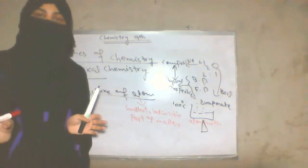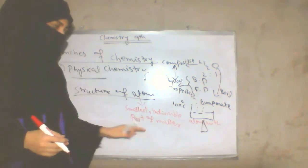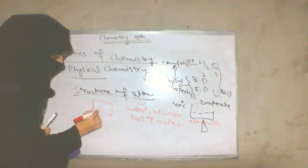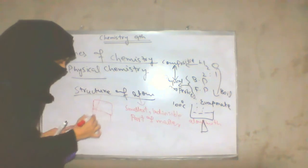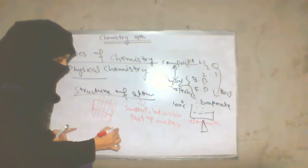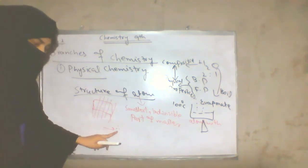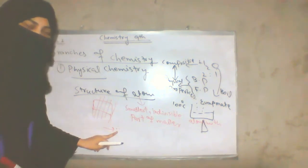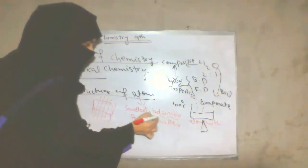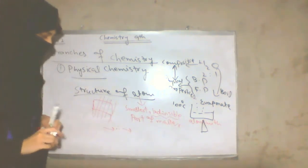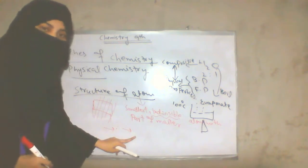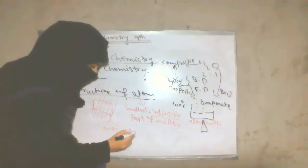If you have any matter — as we have discussed in detail in our previous lecture — for example, you have a table. If you keep cutting it down, cutting, cutting, cutting, it reaches a very small state. When it is converted to a point where it cannot be divided into a second part, and it cannot be dispersed further — that indivisible state is called your atom.